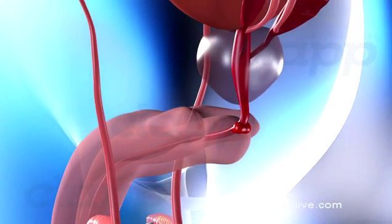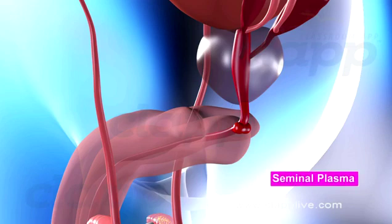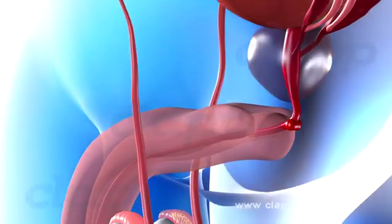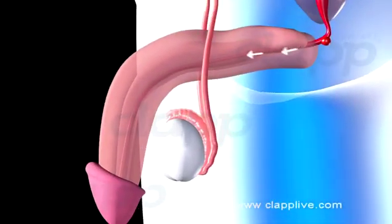Secretions of all these glands are collectively called seminal plasma. Sperms along with seminal plasma constitute semen. The average volume of semen in an ejaculation is 2.5 to 5 milliliters. In males, urine and semen both pass through the urethra.